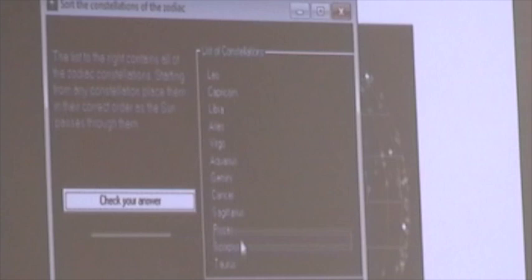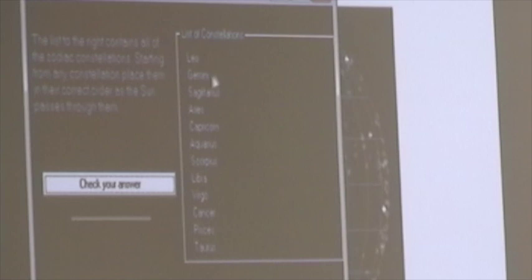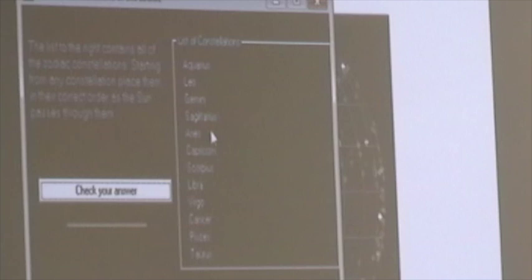To identify the order of the constellations, you just simply need to click and drag, and you can move these constellations around until you have them in the order that matches the order in which you've observed them. You can start with any constellation. If you remember, I started with Aquarius, and my next constellation was Pisces, and I would continue to move constellations.